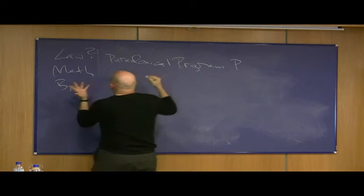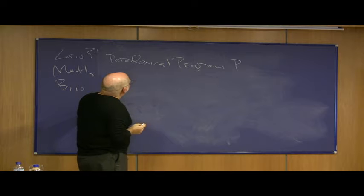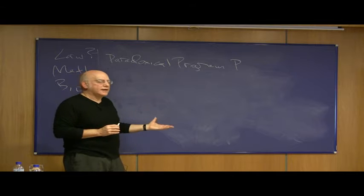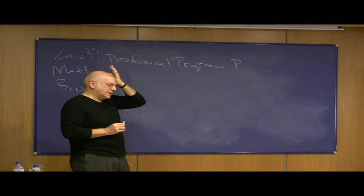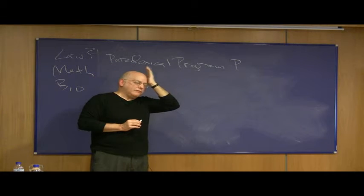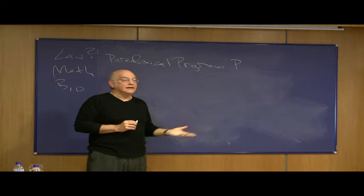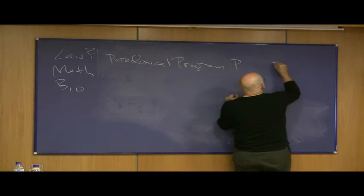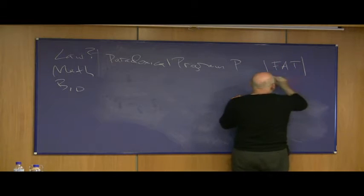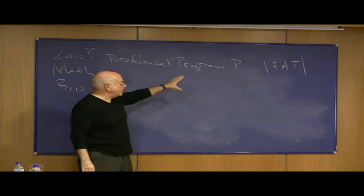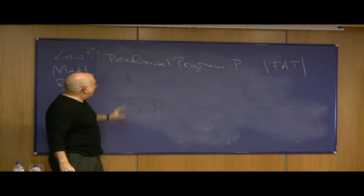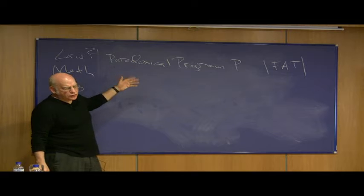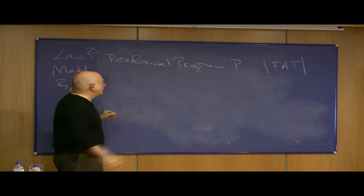We're thinking of a particular formal axiomatic theory, and we're assuming it can prove that individual programs are elegant. We're going to get a contradiction. I'm assuming that this theory doesn't enable you to prove that a program is elegant if in fact it's not elegant. So here's our formal axiomatic theory — it has a certain number of bits in size, a certain program size complexity, a certain algorithmic information content. Let's assume it can always prove that individual programs are elegant when they in fact are. Let's see that this gets us into a contradiction.